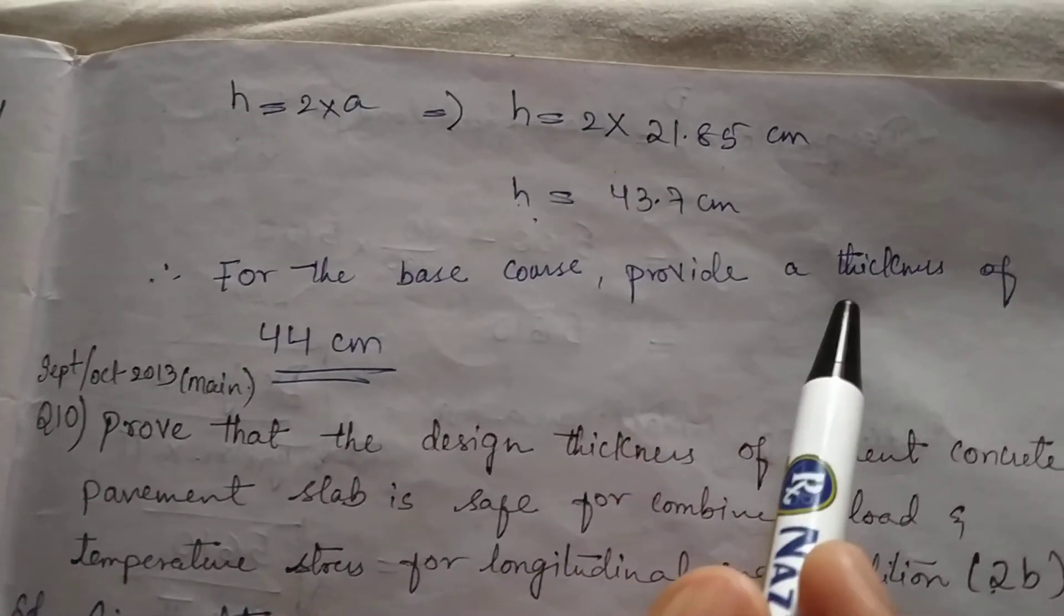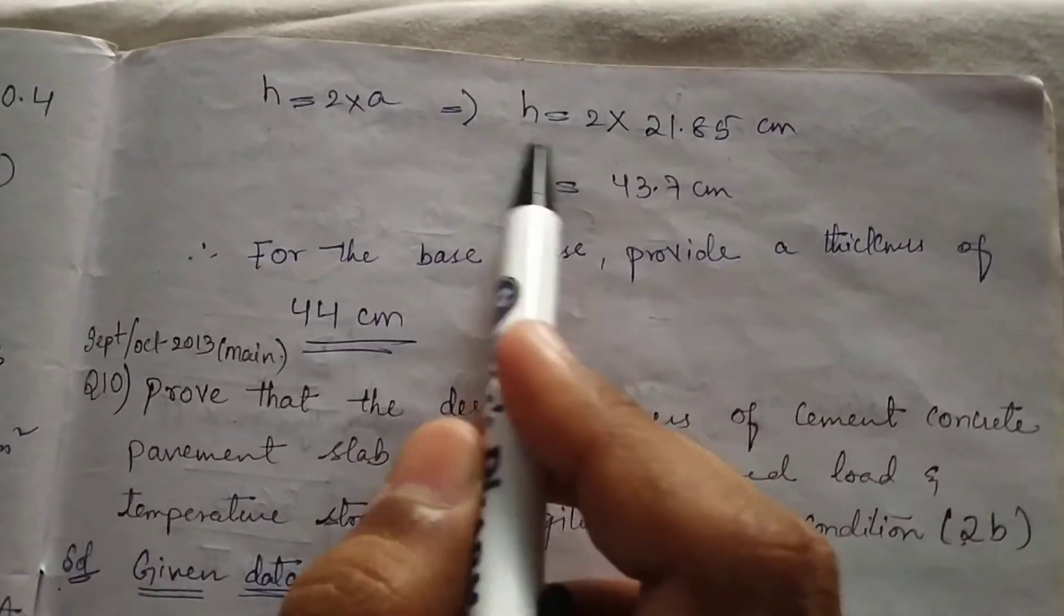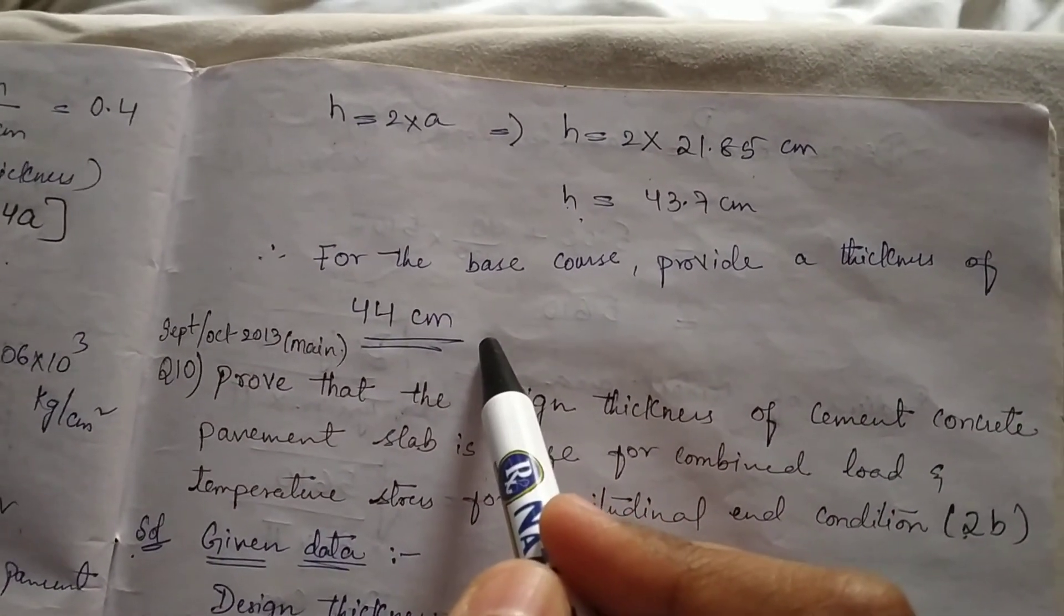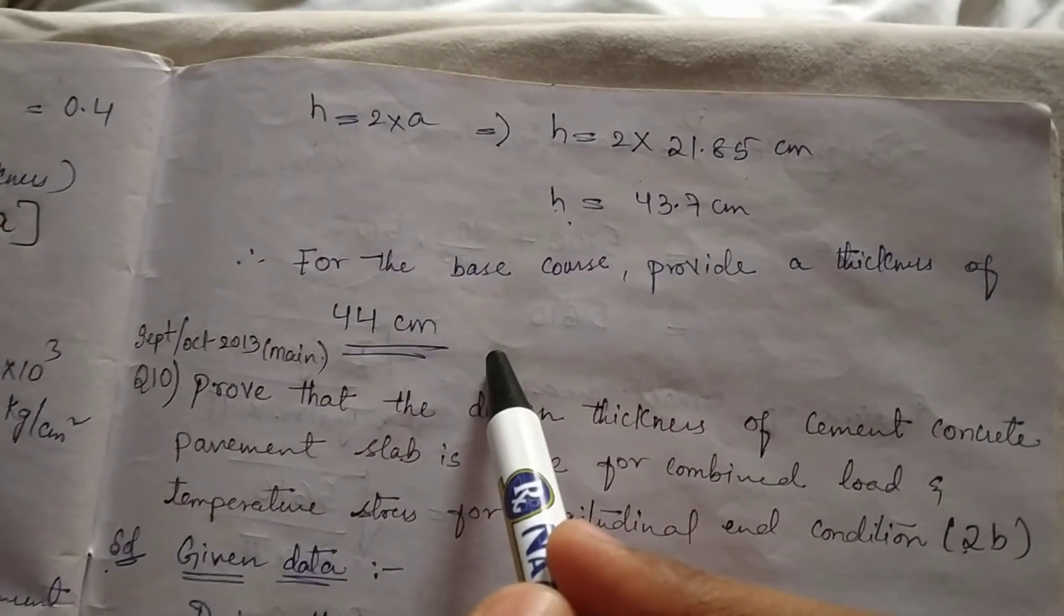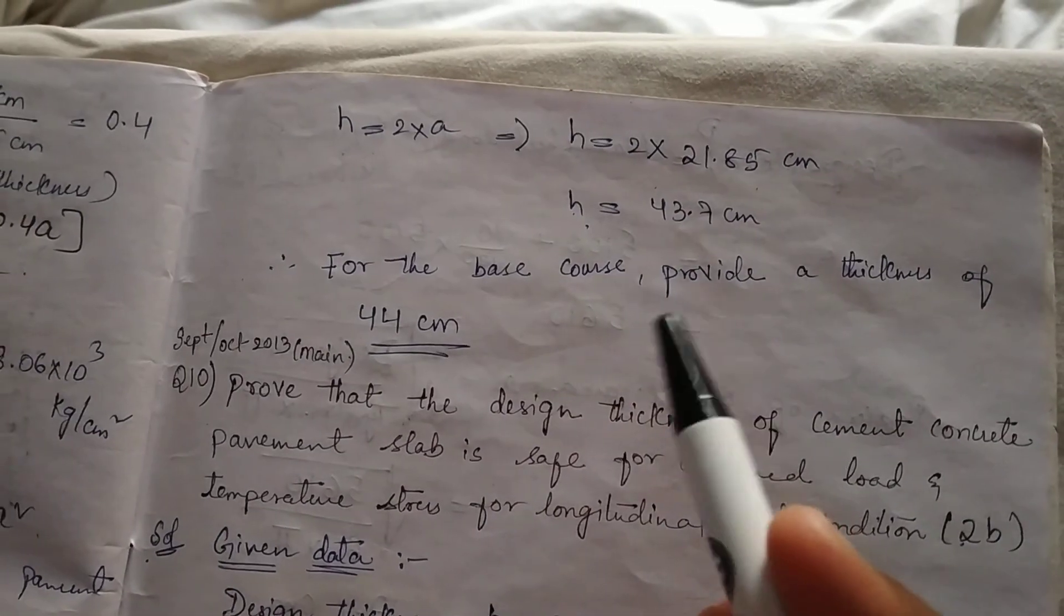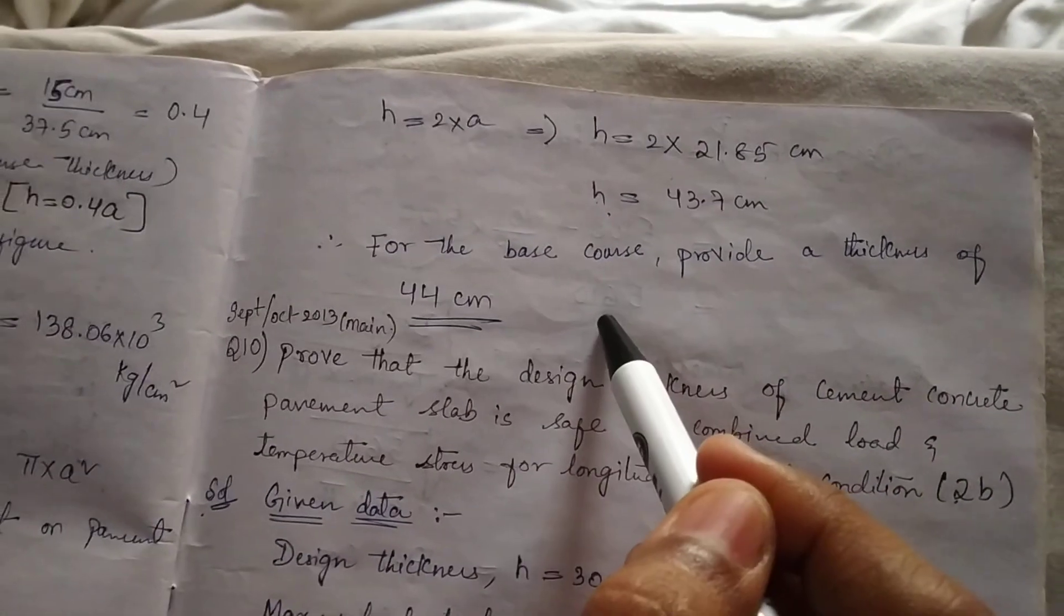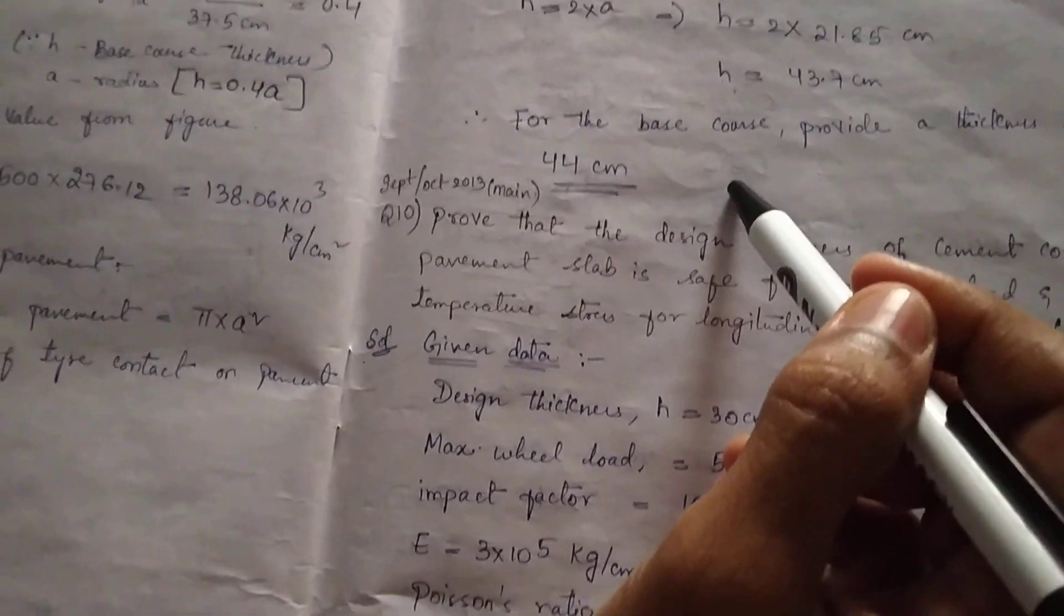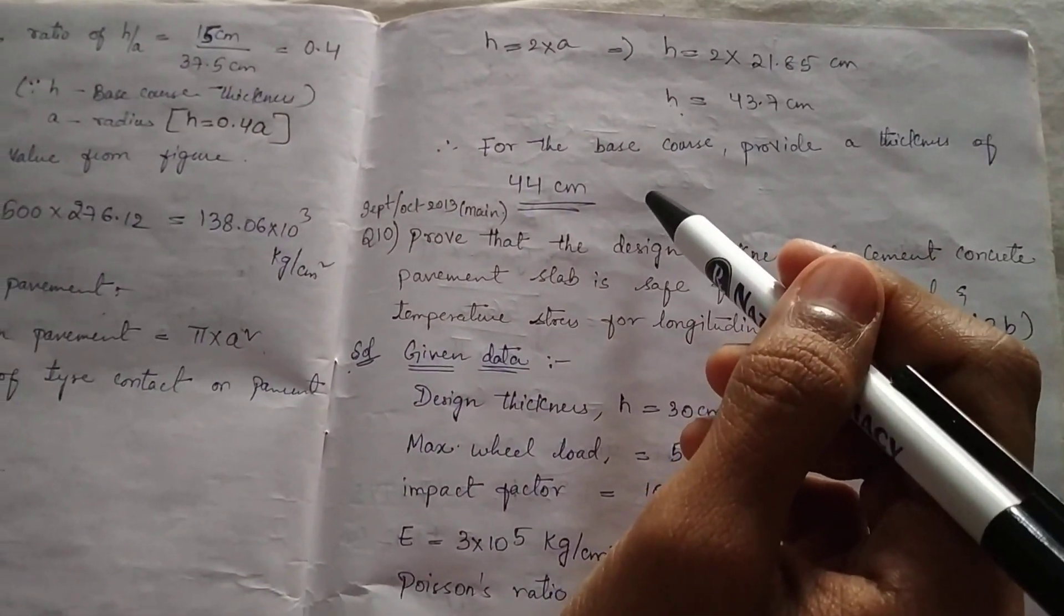Therefore for the base course, provide a thickness of 44 centimeters. I hope you understood it clearly and you can comment in my comment box if you have any doubt. Thank you.